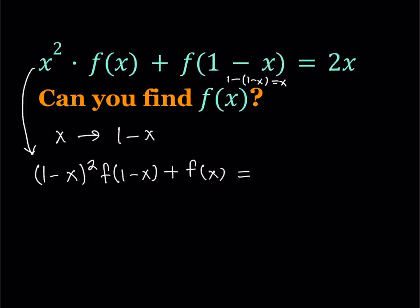And on the right-hand side, I get 2 times 1 minus x, which is 2 minus 2x. Great.